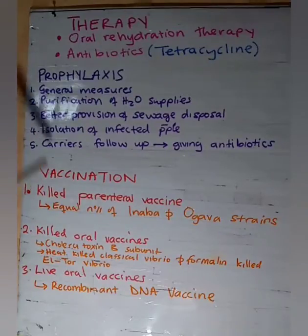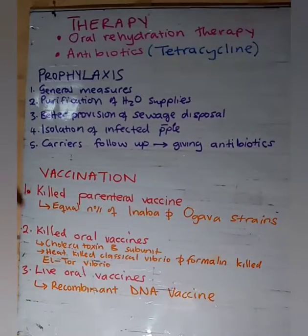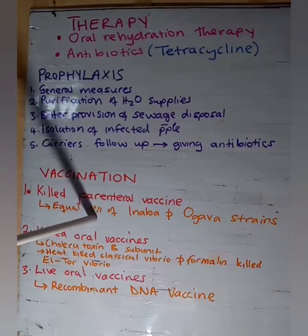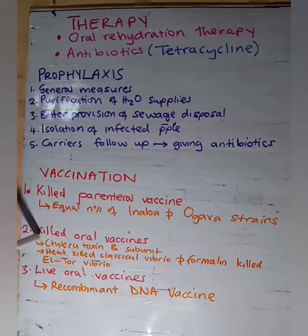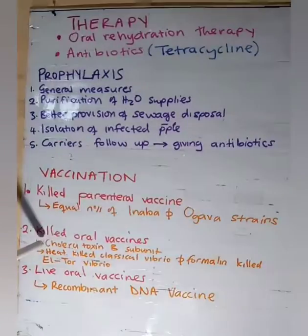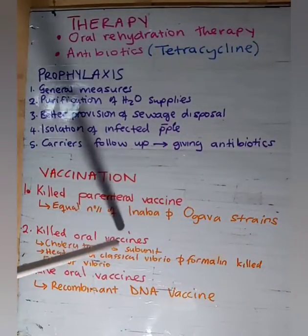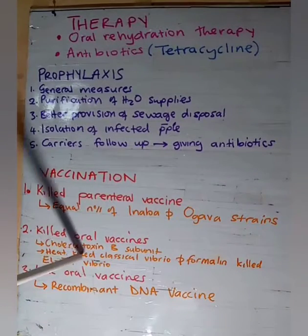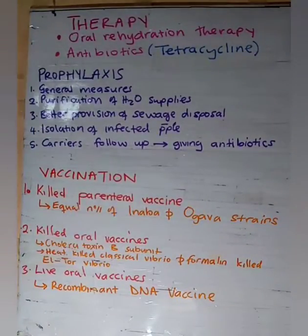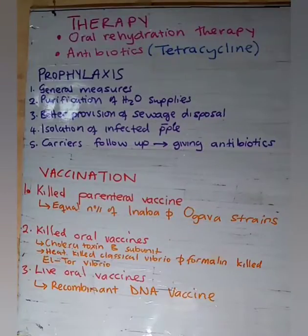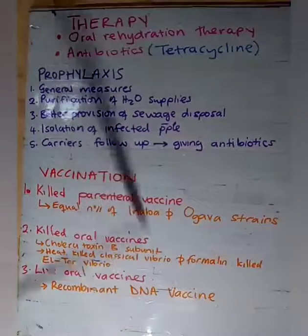On vaccination, there are three types. First, killed parenteral vaccine composed of equal numbers of Inaba and Ogawa strains. Second, killed oral vaccines containing cholera toxin B subunit, heat-killed Classical Vibrio, and formalin-killed El Tor Vibrio. Third, live oral vaccines obtained by recombinant DNA technology.